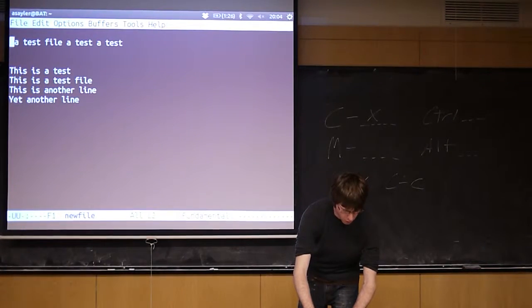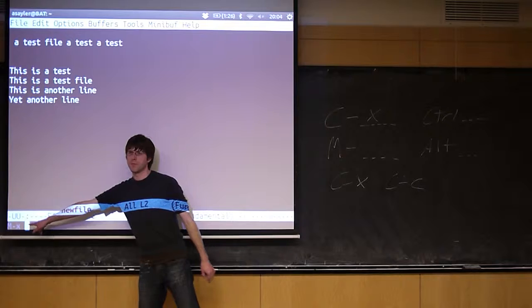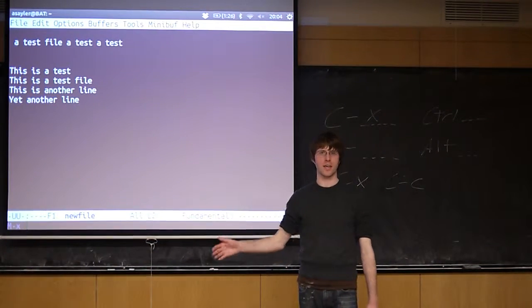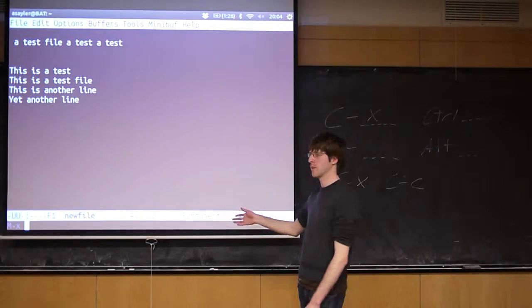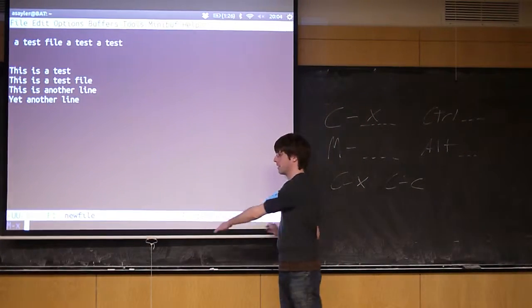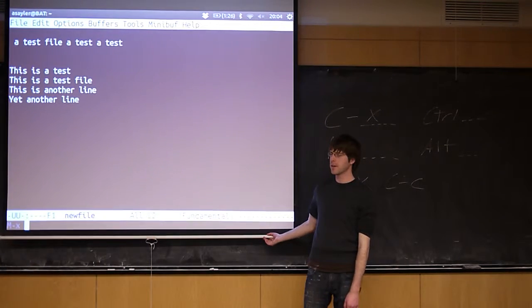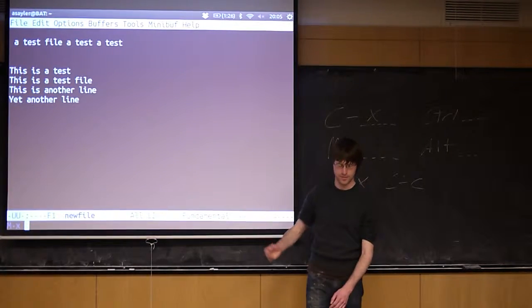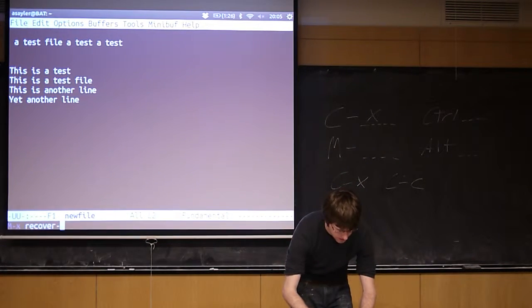So if you do alt x, you get this little prompt at the bottom of the screen. This is essentially where you can type in emacs commands that don't have hotkeys. So alt x always opens up the prompt. And if I wanted to restore the file, I would type in the command it was telling me. I don't remember what command it was telling me. I would get on the go right now and look it back up. It was recover this file.